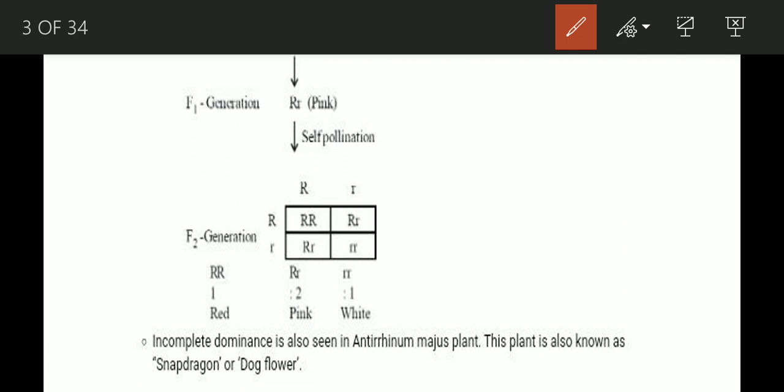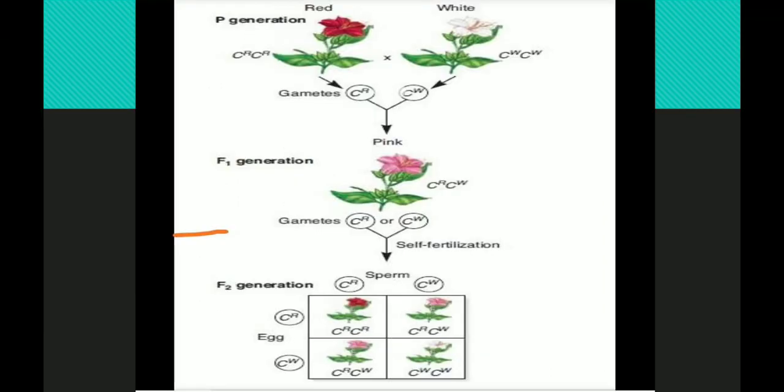Incomplete dominance is also seen in Antirrhinum majus plant, also known as snapdragon or dog flower.